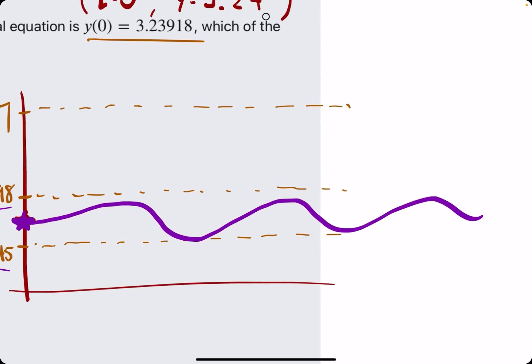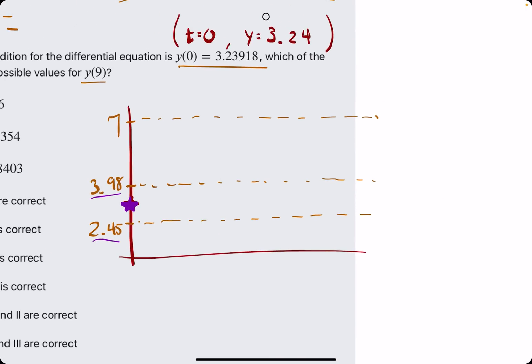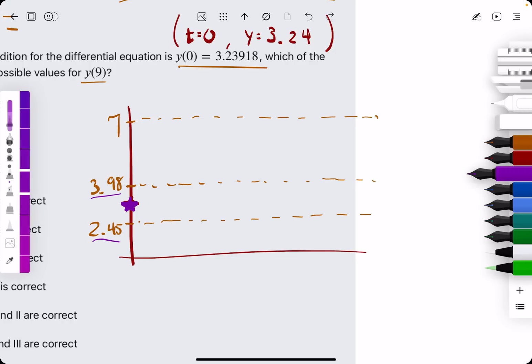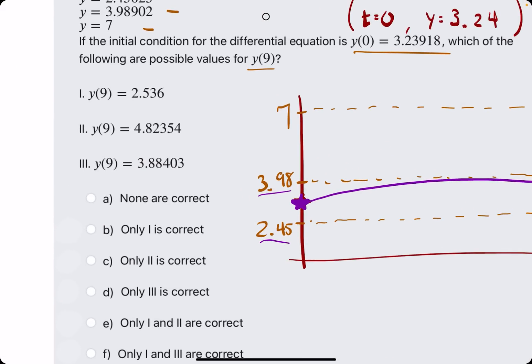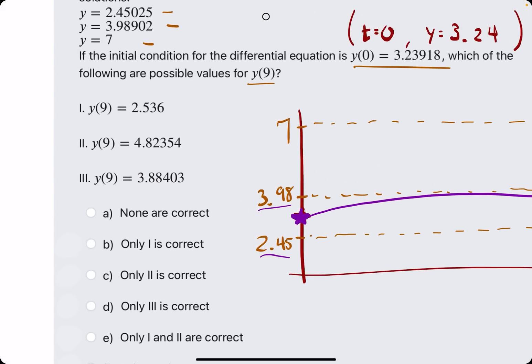It won't necessarily oscillate like this as if it were a sine or cosine curve. Maybe it does this where it approaches 2.45, but never crosses it, or maybe it does this. But the big idea is that it must be between 2.45 and 3.98.